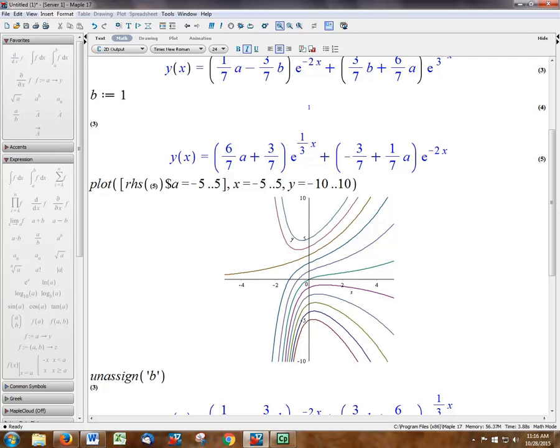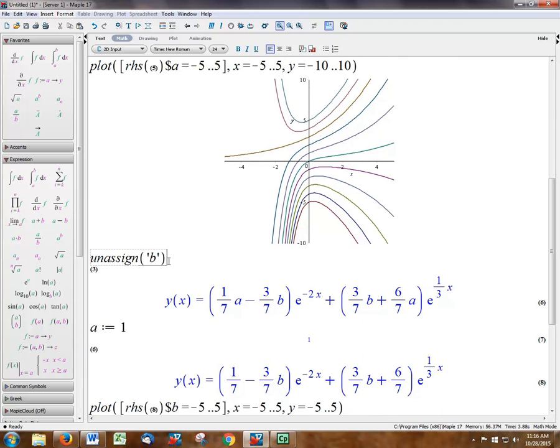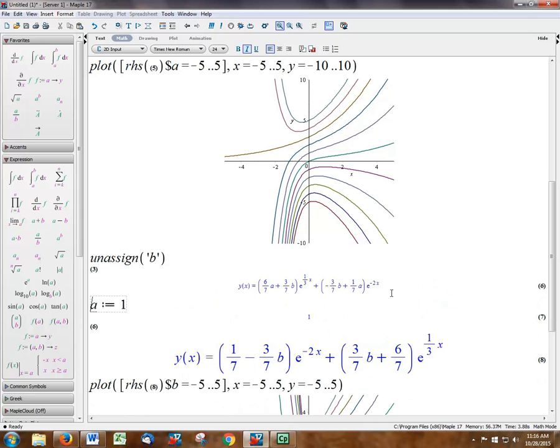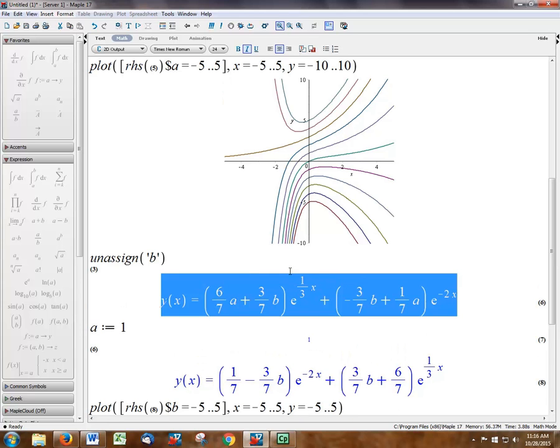And now I need to unassign B because I want my original function back. Because if I blow that up, you can see now that the B is back. And I want to assign A.